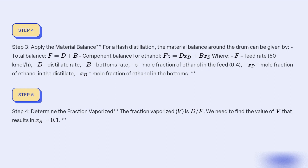Step 4: Determine the fraction vaporized. The fraction vaporized, V, is defined as D/F. We need to find the value of V that results in xB equal to 0.1.